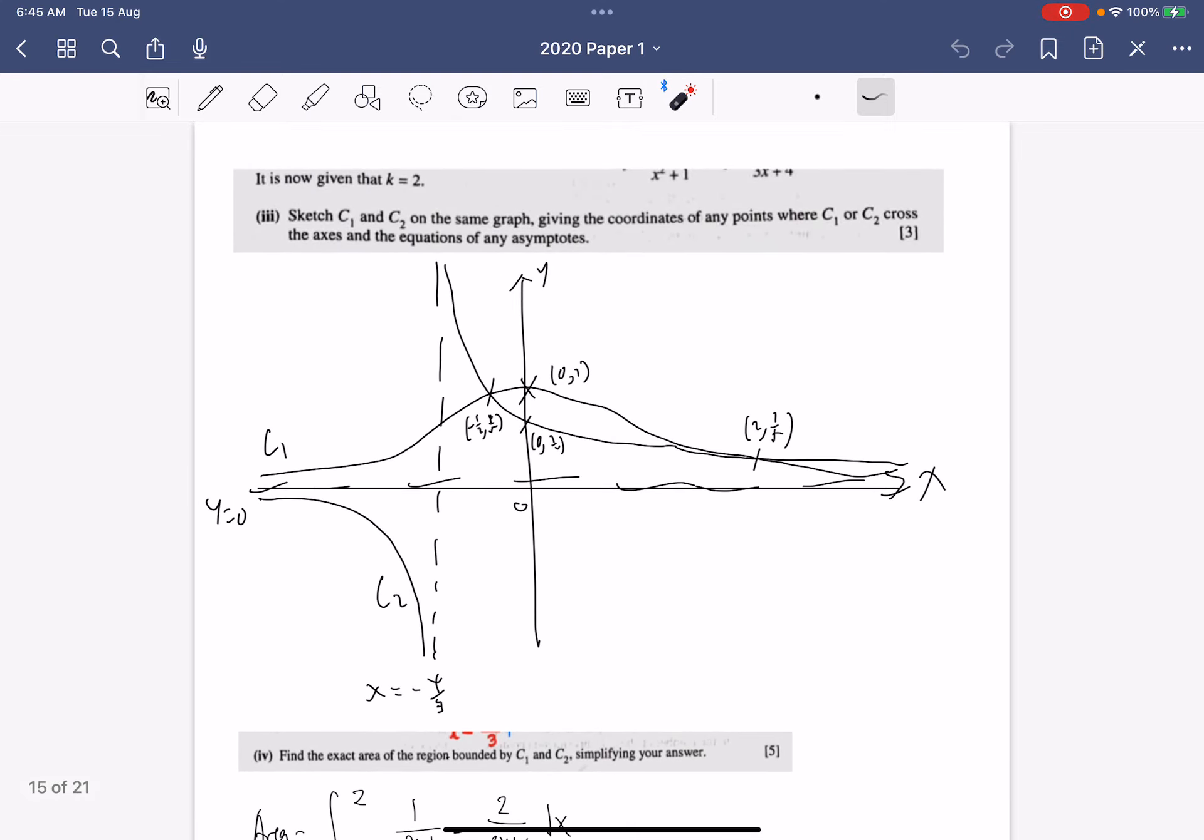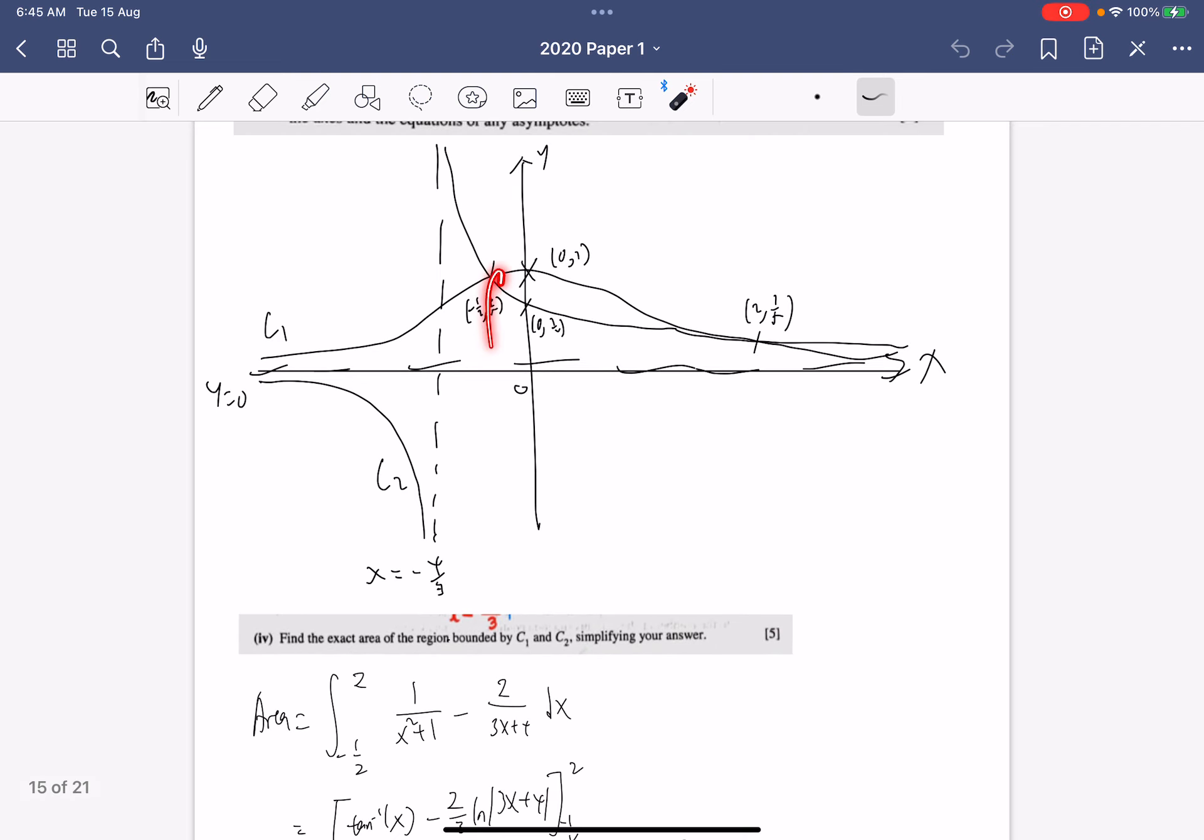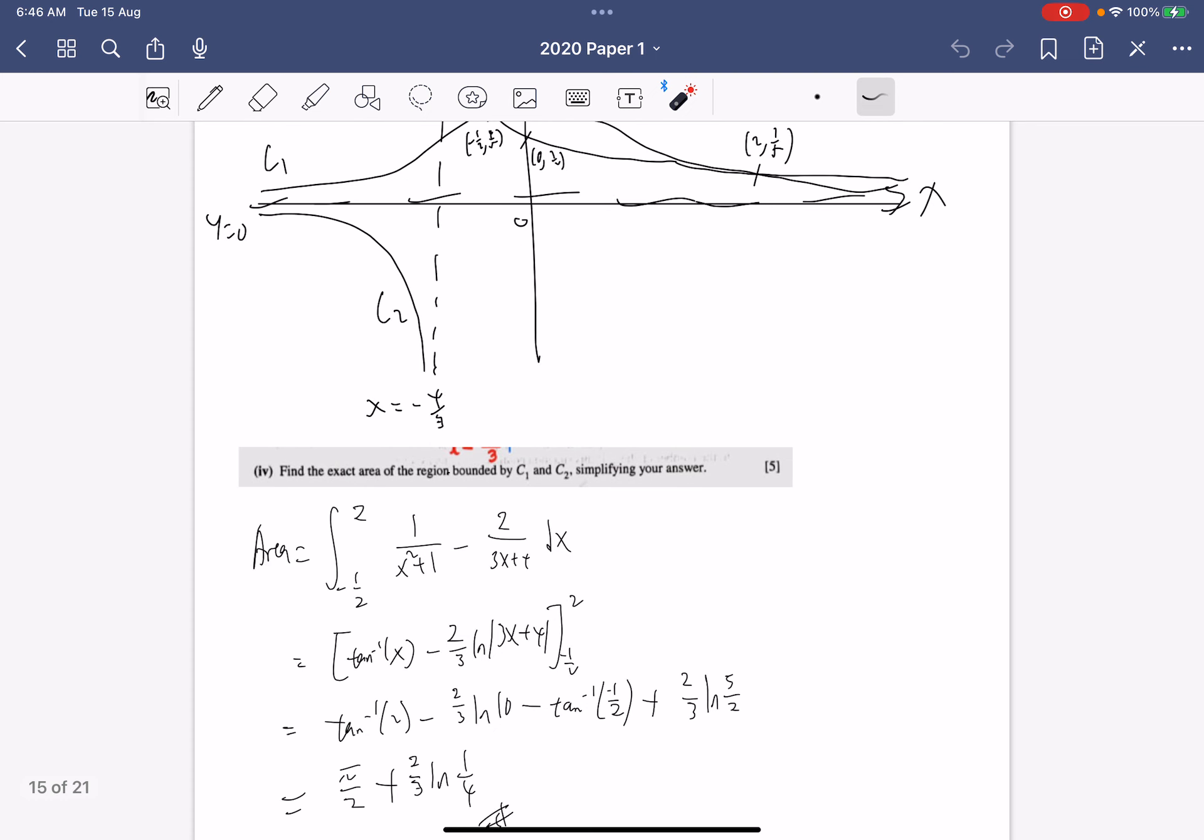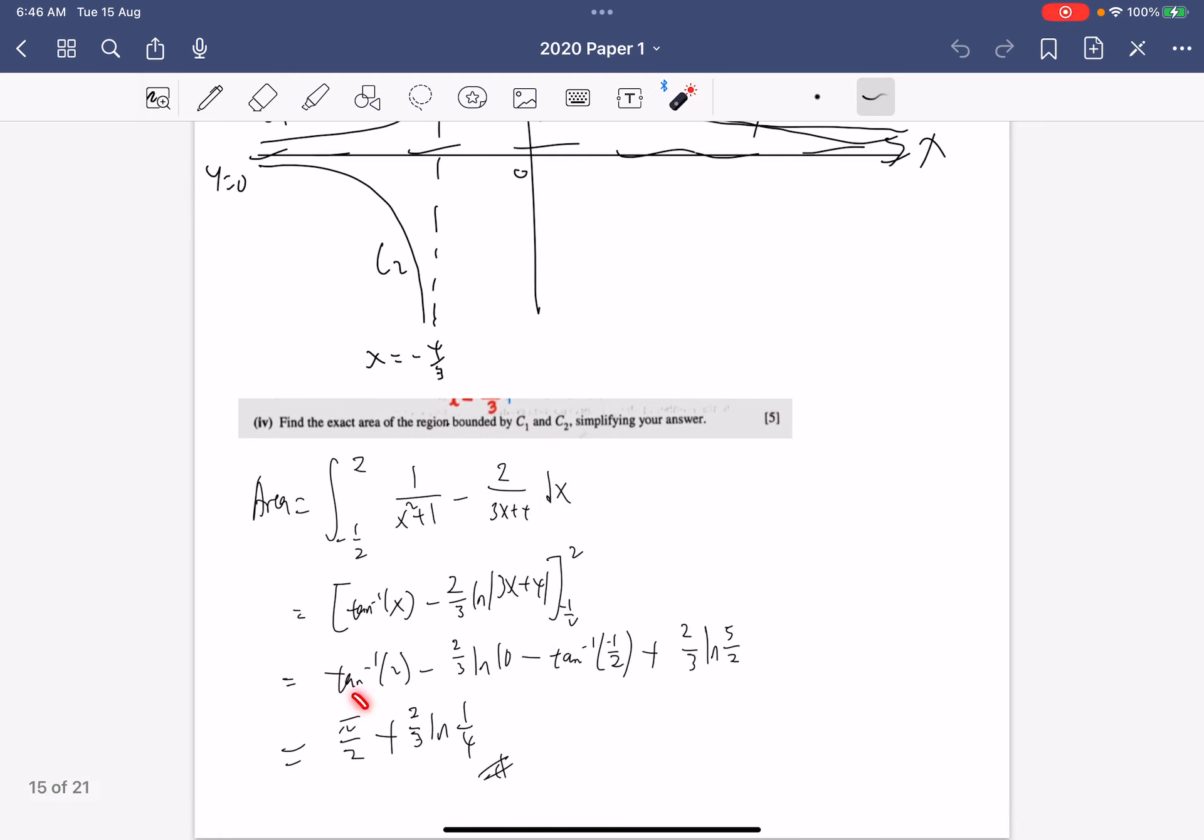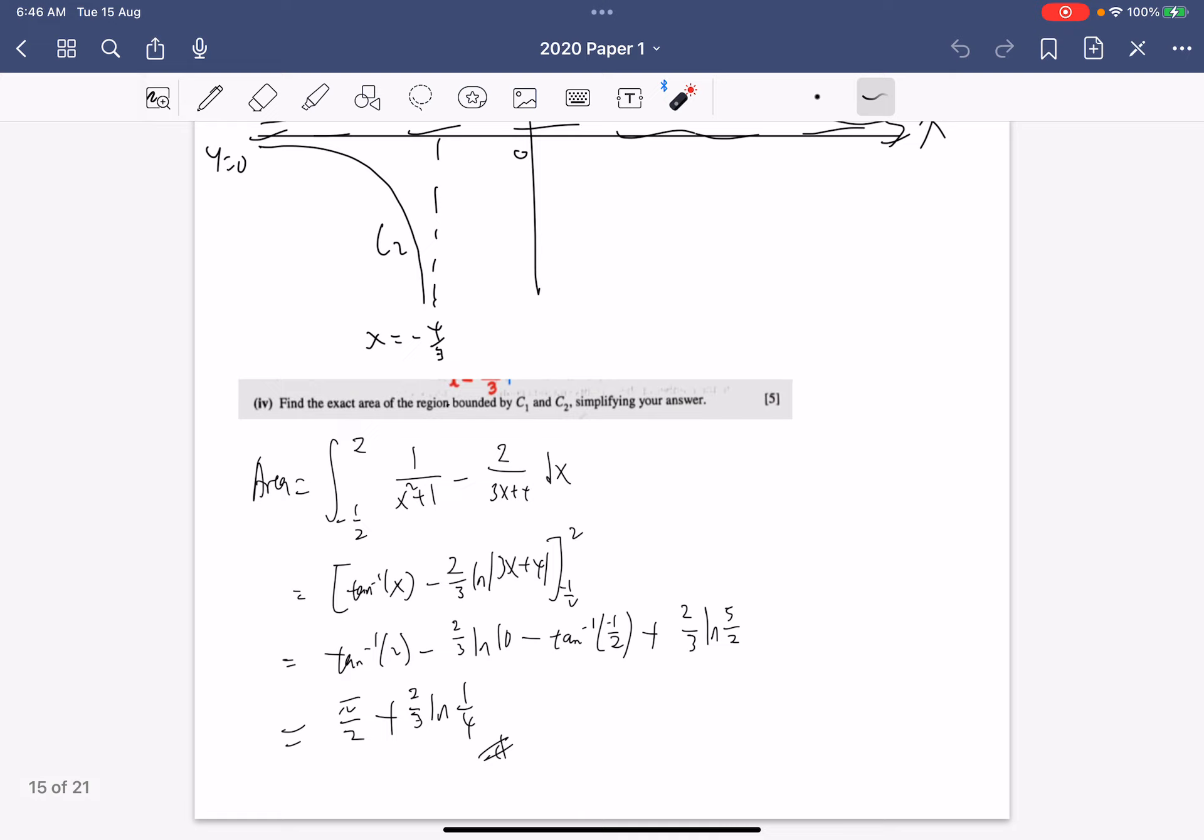And we're supposed to now find the exact region bounded between c1 and c2. So c1 is here and then it's bounded by this part, so it's actually just this region. So it's just integrating from the first intersect to the next intersect, minus half to two. And then you see which one is the higher curve, which is c1, which is 1 over x squared plus 1, and then you minus off the curve below, which is 2 over 3x plus 4. You get to see that this is tangent inverse and then this integrates to log. So you get this following, so just sub in and you get this following. And from earlier we know that tangent inverse 2 minus tangent inverse minus half is pi over 2, so you get this. And we are able to simplify these two logs and combine them to get 2 over 3 log one quarter.